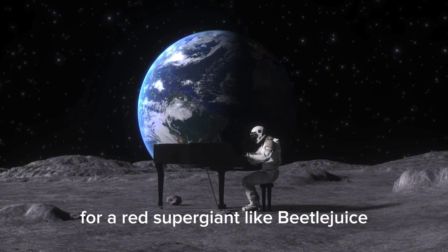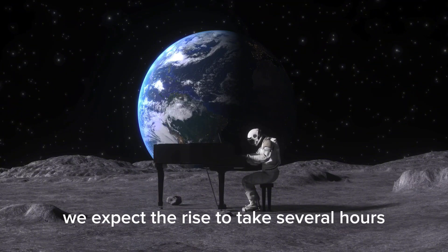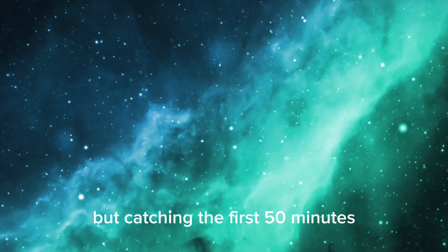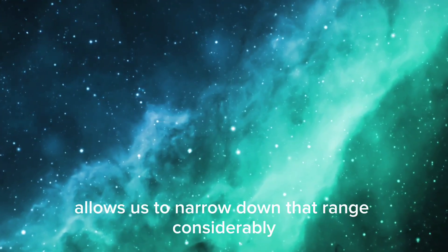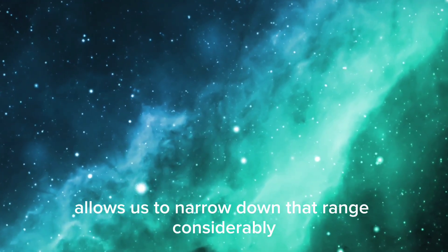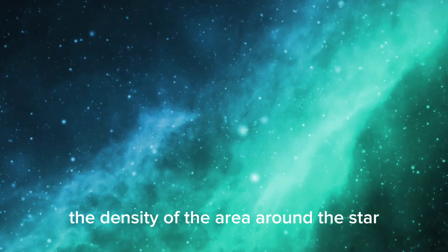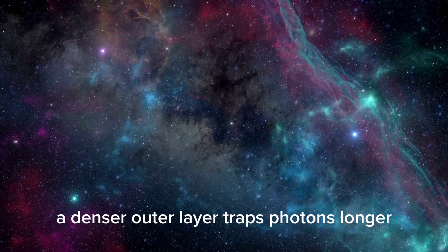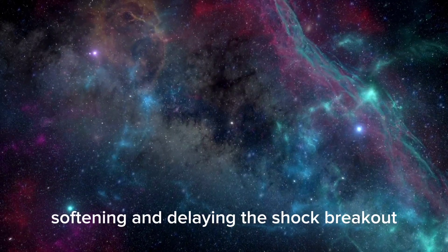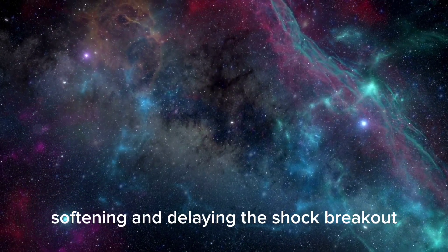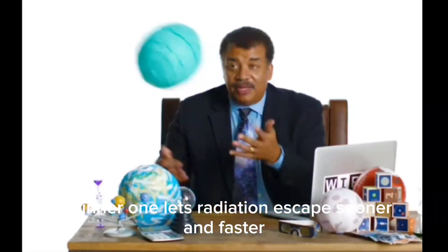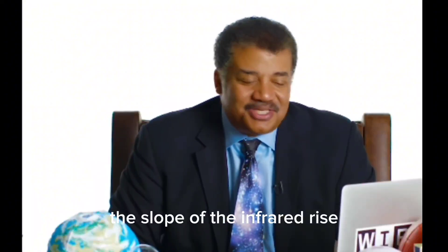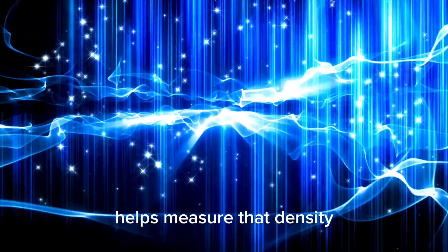For a red supergiant like Betelgeuse, we expect the rise to take several hours. But catching the first 50 minutes allows us to narrow down that range considerably. The density of the area around the star also shapes the first light. A denser outer layer traps photons longer, softening and delaying the shock breakout. A thinner one lets radiation escape sooner and faster.